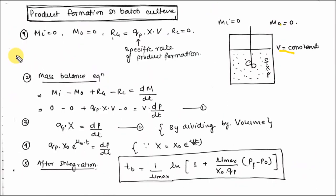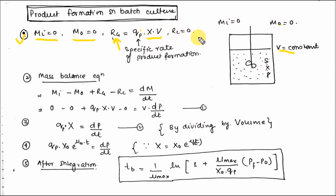Let's discuss product formation in batch culture. Here Qp is the specific product formation rate. Step one: Mi is 0 (no input feeding), Mo is 0 (no output removal). Rate of generation — the product is generated with the help of substrate — equals Qp times X times V. Rate of consumption is 0; there is no consumption of product in the reactor. Step two, the mass balance equation gives Qp·X·V equals V·dP/dt, and since V is constant it comes out. Step three: divide by volume to get Qp·X equals dP/dt.